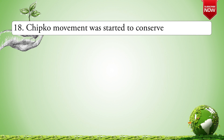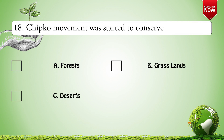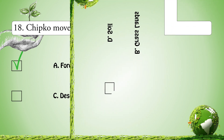Next question: The Chipko Movement was started to conserve — Options are: A. Forests; B. Grasslands; C. Deserts; D. Soil. The correct answer is A: Forests.